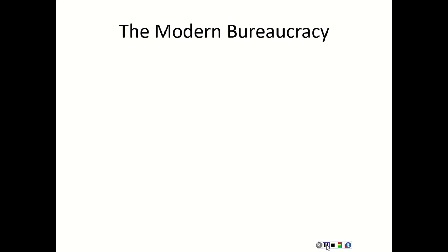That was bureaucracy early on. Now let's talk about the modern bureaucracy. Bureaucracies are government agencies that implement laws. The people who actually work for them are bureaucrats — unelected people who work for the government in cabinet-level departments and independent agencies. These people create over 2,000 bureaus, divisions, branches, offices, services, and other subunits of the federal government.